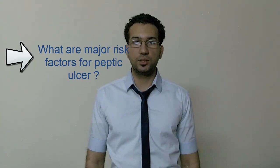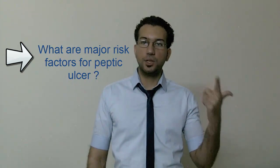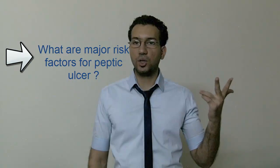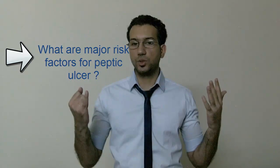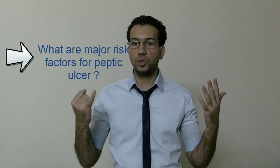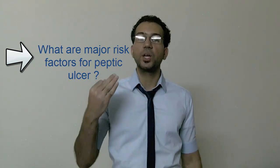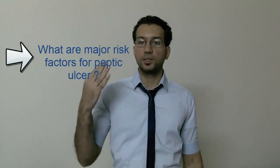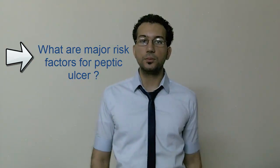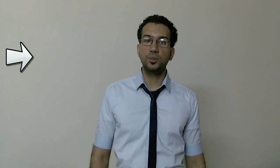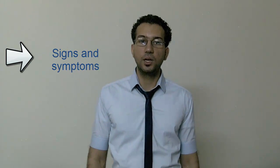The major risk factors for peptic ulcer disease include: H. pylori infection, cigarette smoking, excessive alcohol use, high levels of stress, chronic use of aspirin, chronic use of non-steroidal anti-inflammatory drugs, a family history of ulcer disease, aging, high serum gastrin levels, gastric hyperacidity, and chronic gastritis.